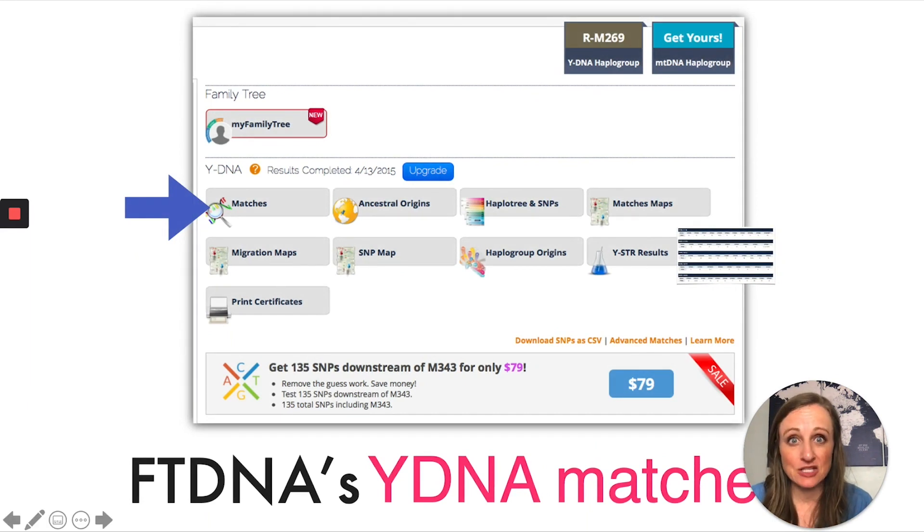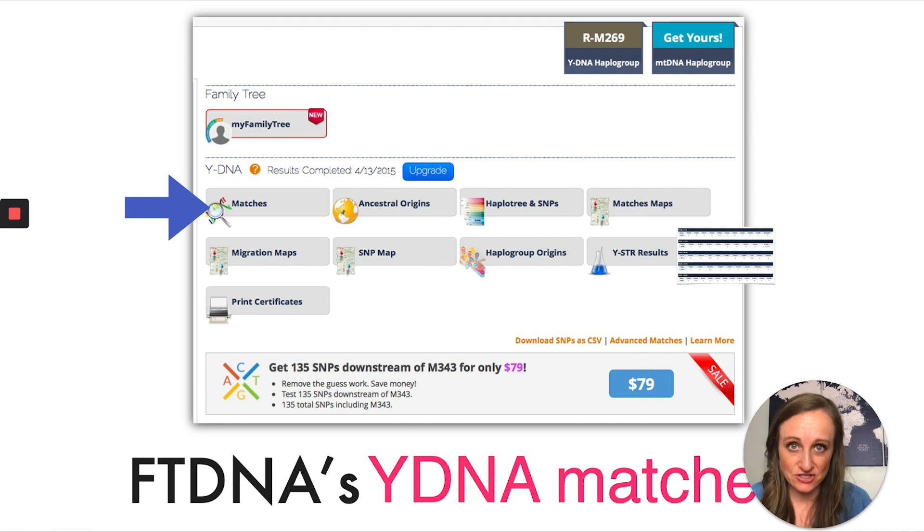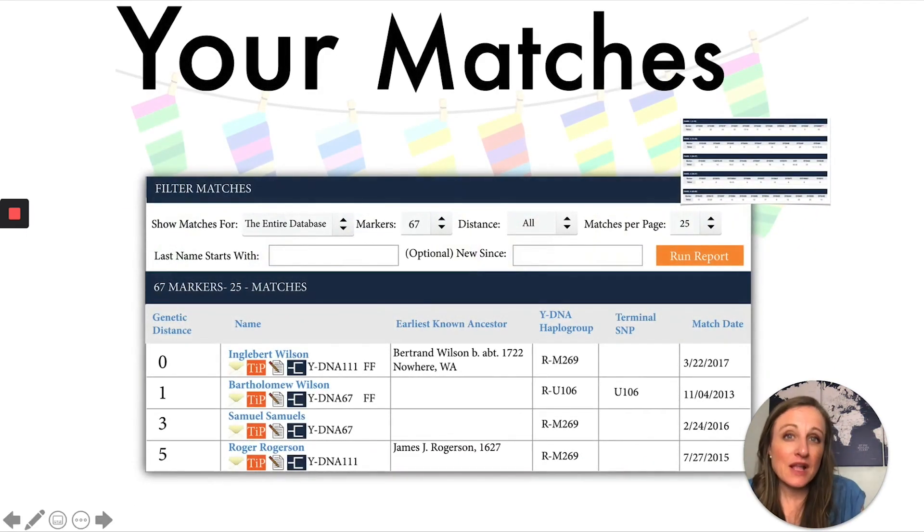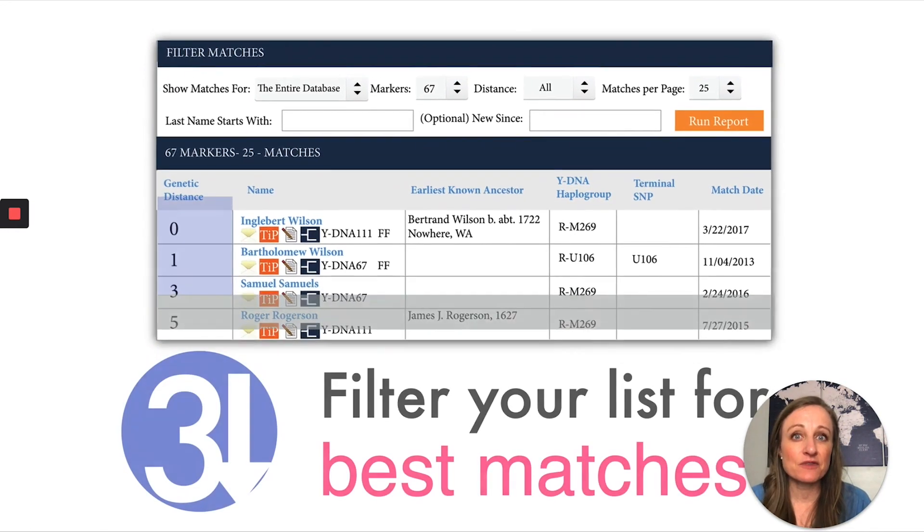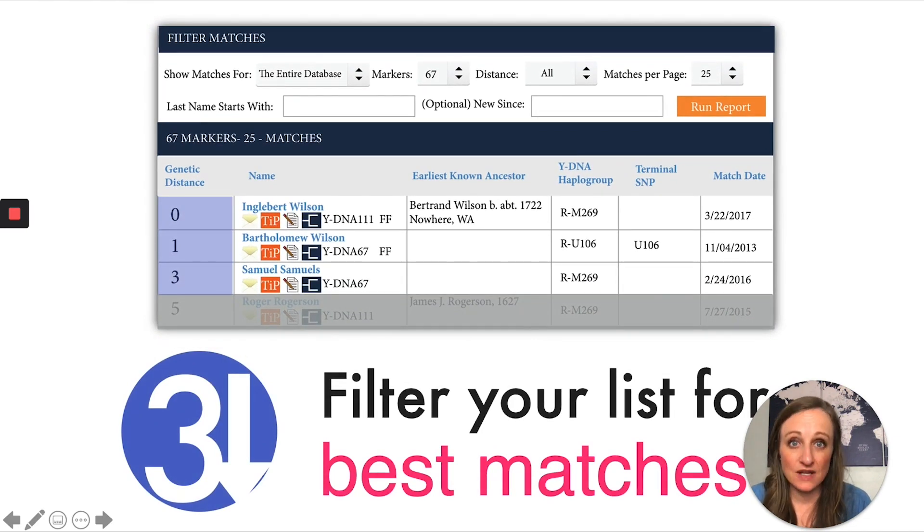If you want to look at this match page for yourself, you'll go to that dashboard at FamilyTreeDNA and you click right there on matches. That will bring up your match page, which admittedly contains a lot of information, but really you can distill the information you need to know down to this one column.